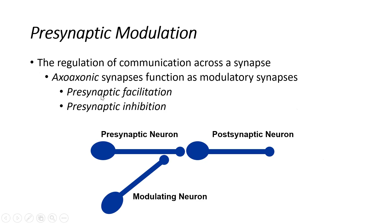That was frequency coding. The fourth factor that plays a role in neural integration is presynaptic modulation. This brings us to the axo-axonic synapse, where the axon terminal of one neuron synapses onto the axon terminal of another neuron. That type of connection is what is involved in presynaptic modulation. We can have presynaptic facilitation or presynaptic inhibition, modulated by a modulating neuron synapsing onto the axon terminal of the presynaptic neuron.